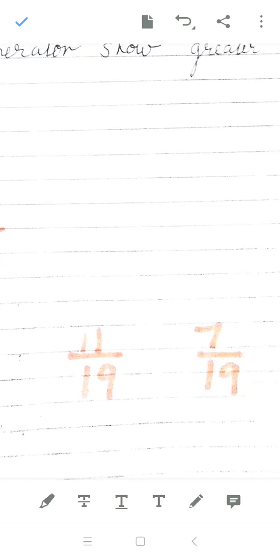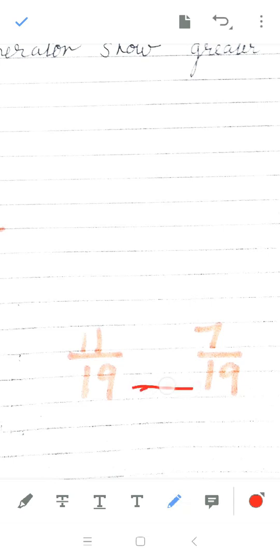Let us see one more example. 11 upon 19 and 7 upon 19. What is same? Denominators are same. So when denominators are same, what have we studied? Greater numerator shows greater fraction. So which is greater? 11 upon 19, 7 upon 19. 11 upon 19 is greater than 7 upon 19.